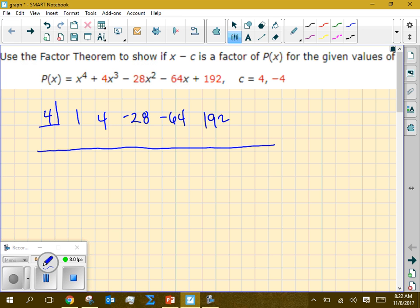The next thing you're going to do, you're going to bring that 1 down. We're going to bring our 1 down, multiply, gives us a 4 there. Add straight down, gives you 8. Now multiply 4 and 8, gives you 32. Add straight down, gives you 4. Then it gives you 16. Add straight down, and that gives you a negative 48. And 4 times 48, 192, right? It's going to be negative 192. So because this is a zero, that tells us, yes, 4 is a zero. Because the remainder was zero, that means 4 is a zero.